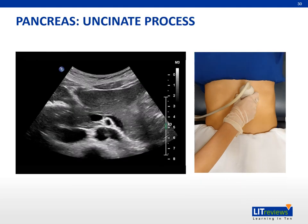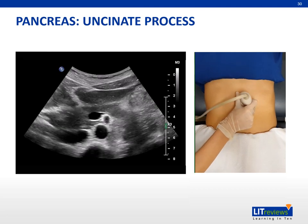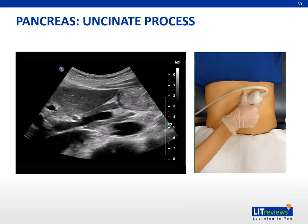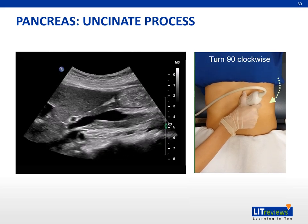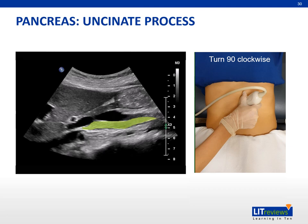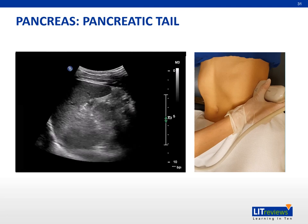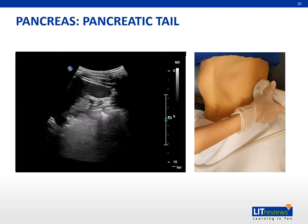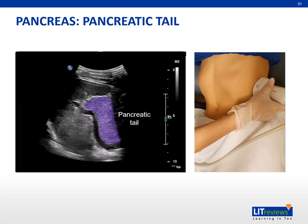The uncinate process of the pancreas is best visualized with the sagittal view. With the portal confluence at the center of the image, rotate the transducer 90 degrees clockwise. The uncinate process is seen in relation to the superior mesenteric vein. The pancreatic tail can sometimes be seen using the spleen as an acoustic window, with the splenic vein as the landmark. If a lesion is seen at the splenic hilum, the differential should always include a pancreatic tail lesion.